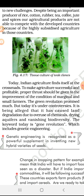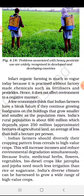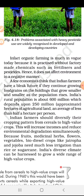The green revolution promised much — it promised to increase production — but today it is under controversy. It is alleged that it has caused land degradation due to overuse of chemicals, dying aquifers, and vanishing biodiversity. The key word today is gene revolution, which induces genetic engineering. Organic farming is much in practice today because it is practiced without factory-made chemicals such as fertilizers and pesticides.